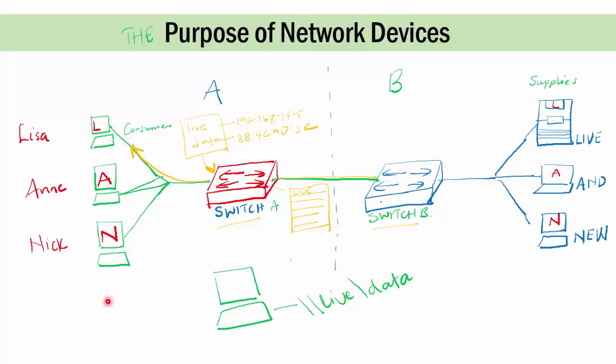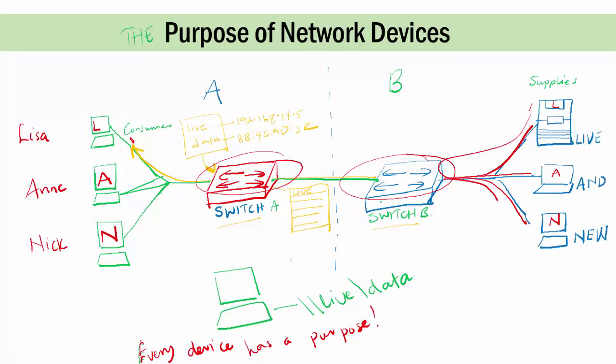So this is the concept again. Every device has a purpose. The switch serves its purpose. It takes care of the traffic being forwarded, or packets being forwarded, or frames being forwarded from one to another or within the same network. When you ever think of a network, what I want you to remember is that every single component or device has a purpose.